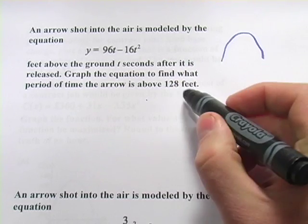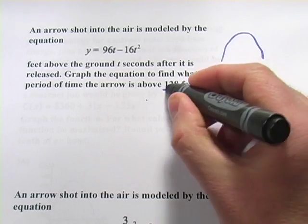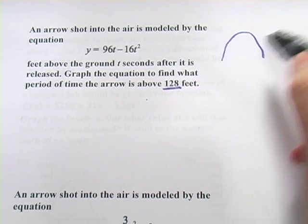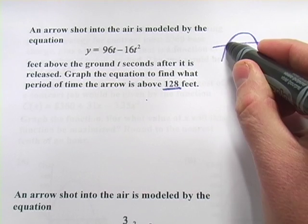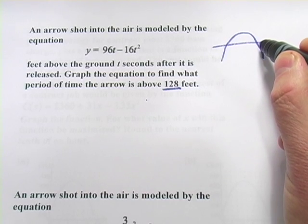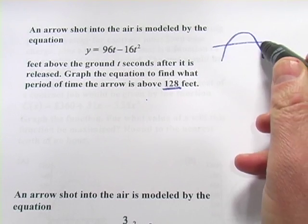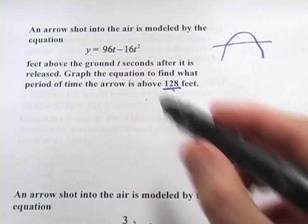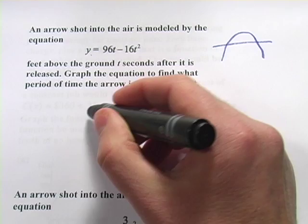What we want to do first is figure out at what points is the arrow 128 feet above the ground. Assuming it gets that high, it's going to be 128 feet at two points, right? One where it comes up and one where it drops back down through 128. If we want to find those two points, we have to plug in 128 for y here and solve for t. It'll give us two answers.